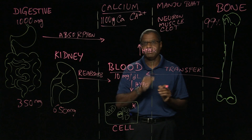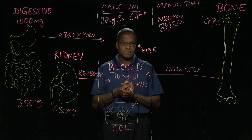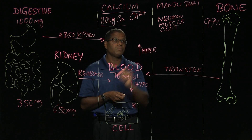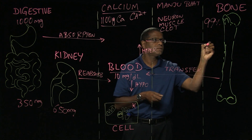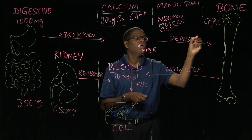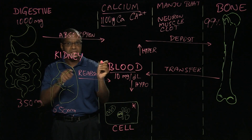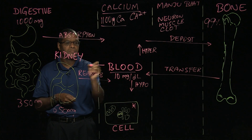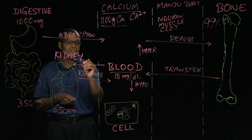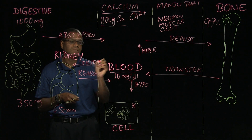Now let's say we have hypercalcemia — we need to reduce calcium in the blood. One way is to take calcium from the blood and deposit it in the bone, or we can increase excretion of calcium from the blood through the kidneys by increasing the filtration rate.